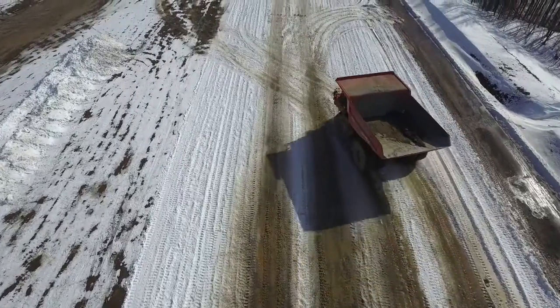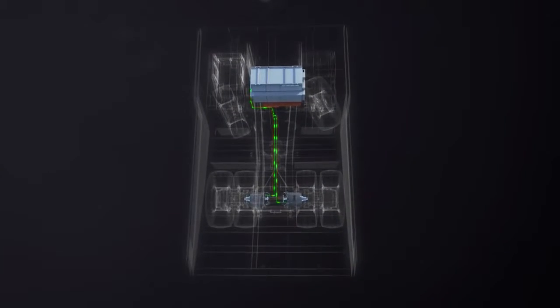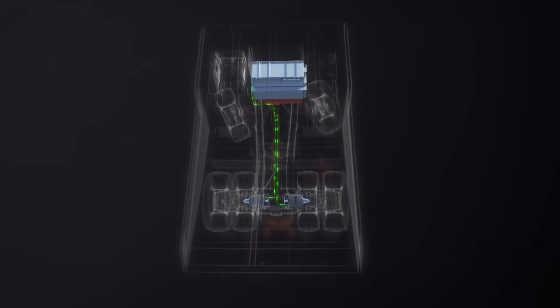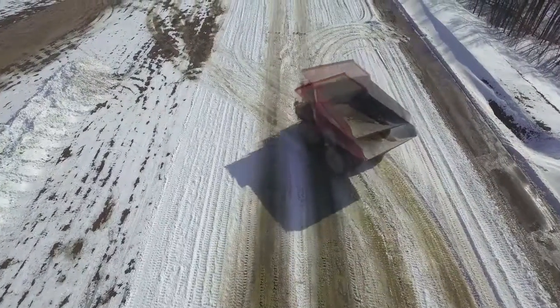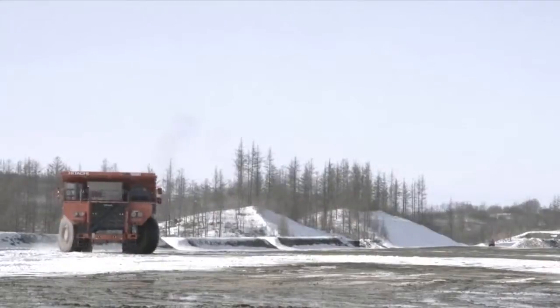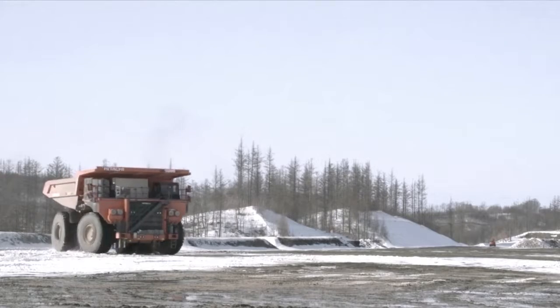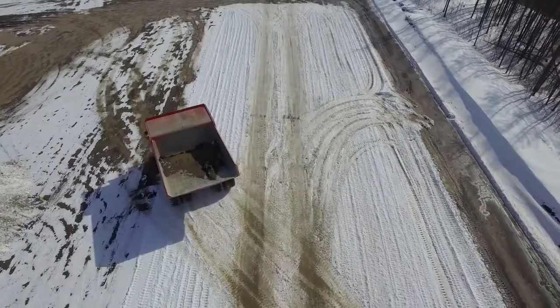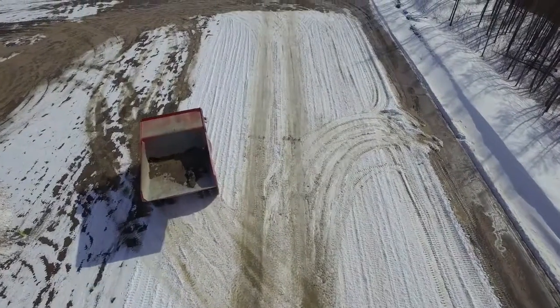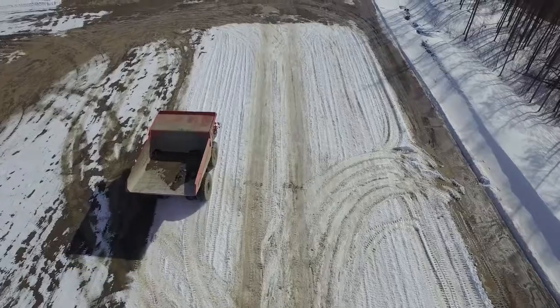During an understeer event, the Hitachi drive control system signals the rear wheel motors to reduce traction torque, allowing the front wheels to regain traction rather than being pushed through the turn. When the truck is oversteering, the system signals the outer rear wheel motor to reduce traction torque, allowing the truck to overcome the inward torque created by the rear wheels losing traction.